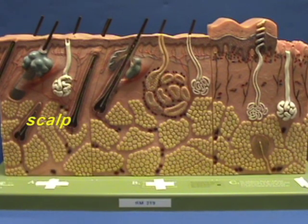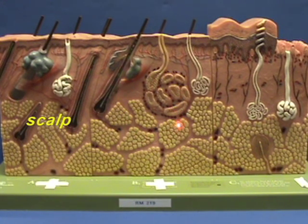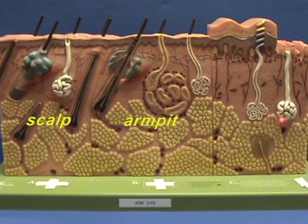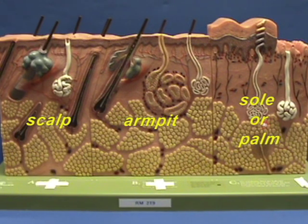In the middle, right over here, this is meant to show the structure of the skin in the armpit and some of the structures you might see in that region. And then finally, right over here, this is meant to show the structure of the skin in the sole of the foot, or this also could be on the palm of the hand.